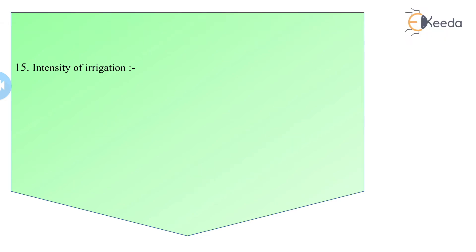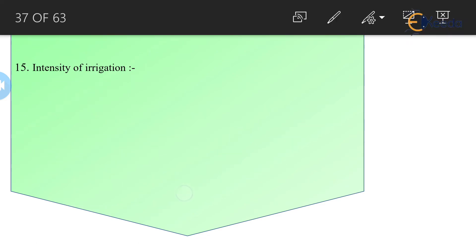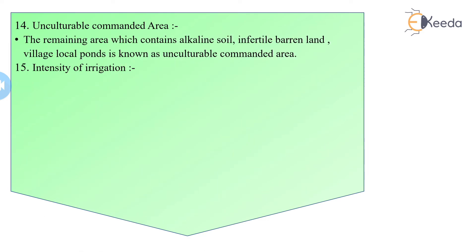Unculturable commanded area is the remaining area which contains alkaline soil, infertile or barren land, village sites, local ponds, or is obstructed by structures. Since the soil is infertile or otherwise unusable, crops cannot be produced from such area — this is known as the unculturable commanded area.